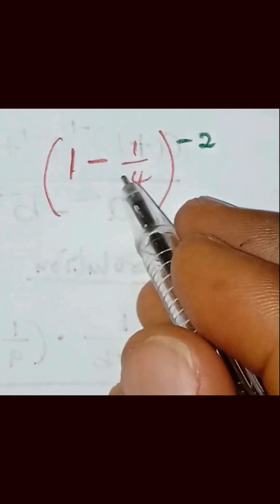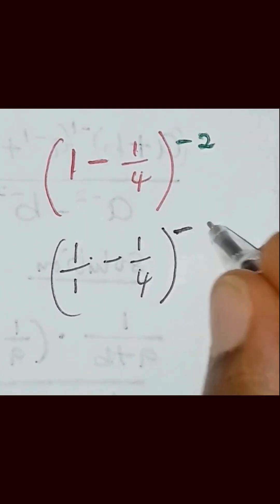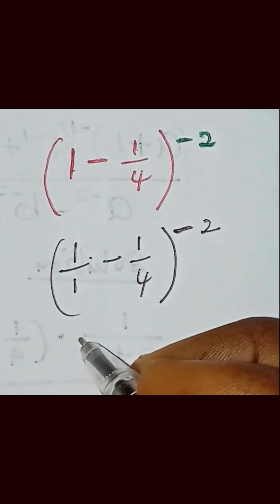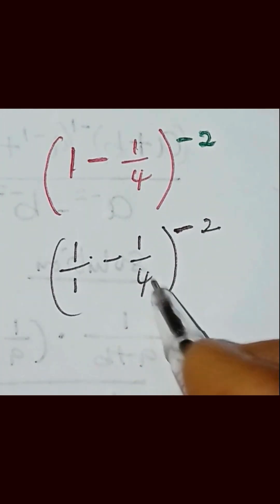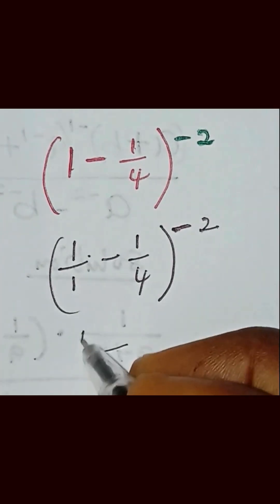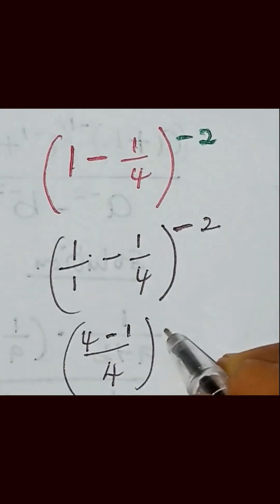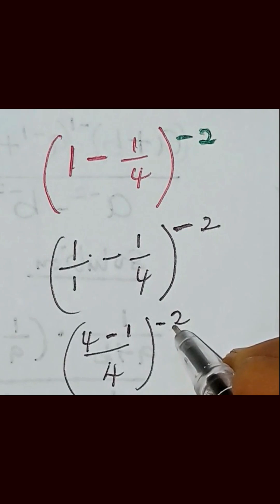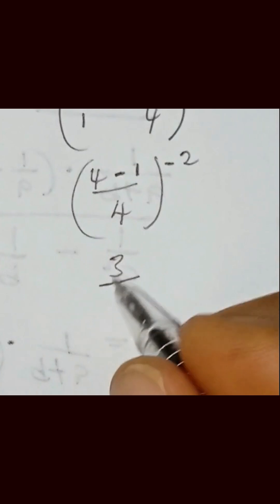Let's simplify the expression in the brackets. We have 1 equals 1 over 1, minus 1 over 4, close the bracket raised to power minus 2. Finding the LCM: 1 times 4 gives us 4, 4 times 1 gives us 4, and 1 times 1 gives us minus 1. Close the bracket raised to power minus 2. So 4 minus 1 gives us 3 over 4.